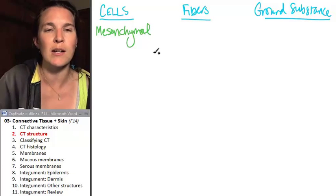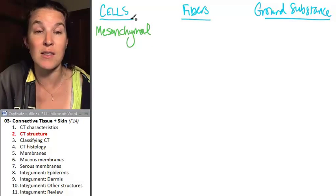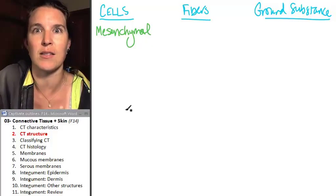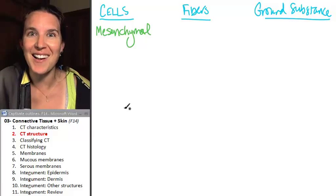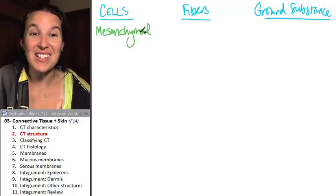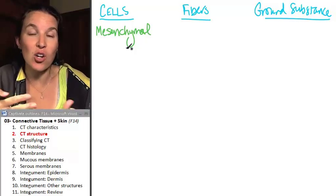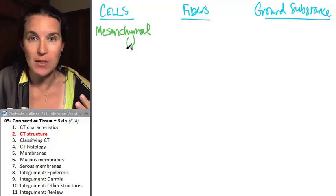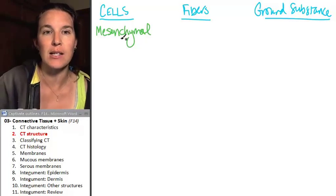I'm not going to write the word cell down because if it's in the cell pile, it's a cell. Mesenchymal cells are stem cells, and so these guys give rise to all sorts of other types of cells that you can find in connective tissue.